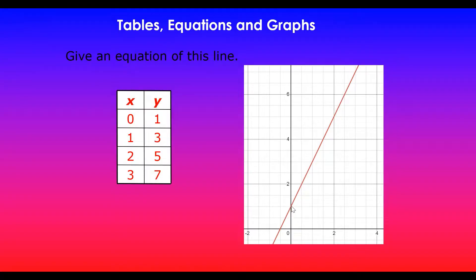So let's create a table. In this case, the y-intercept is at 1, so 0, 1. And then 1 pairs up with 3. So 1, 3. And then I've got 2 with 5, and of course 3 with 7.